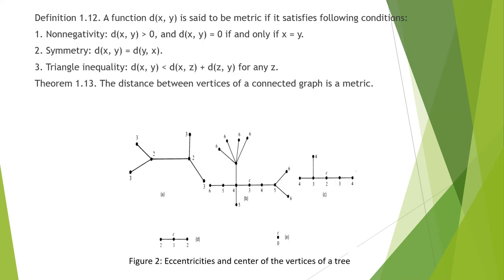Definition of a metric: a function d(x,y) is said to be a metric if it satisfies the following conditions. First, non-negativity: d(x,y) should be greater than 0, and d(x,y) equals 0 if and only if x equals y. Second, symmetry: d(x,y) should equal d(y,x). Third, triangle inequality: d(x,y) is less than or equal to d(x,z) plus d(z,y) for any z. The theorem is: the distance between vertices of a connected graph is a metric.